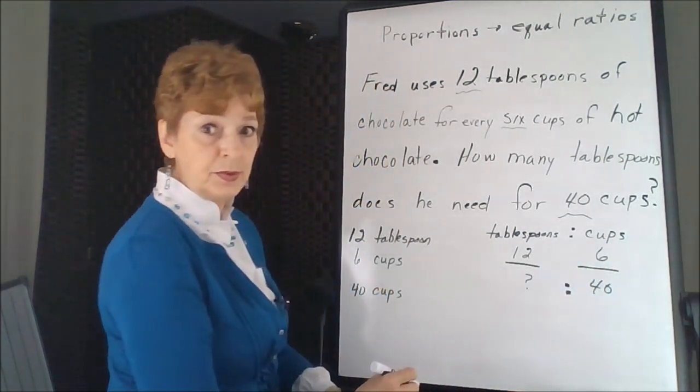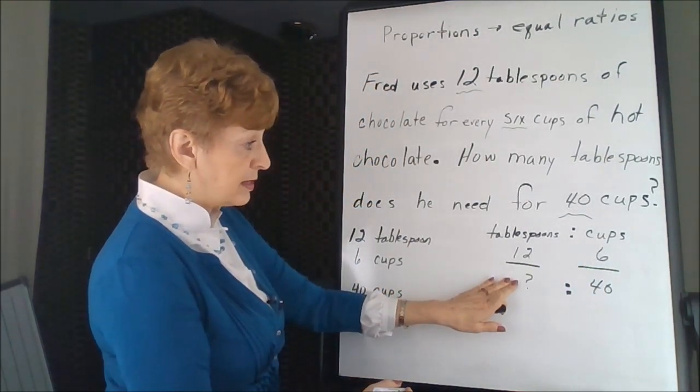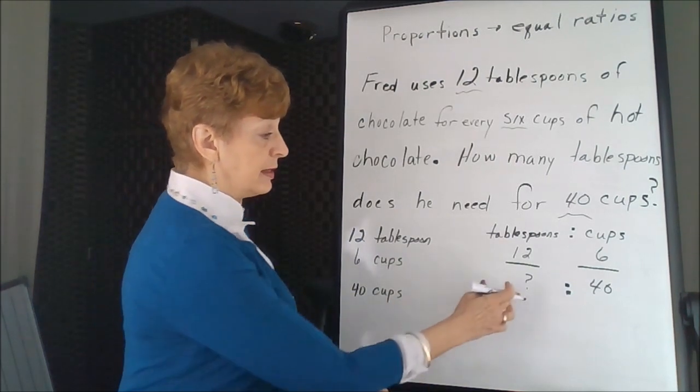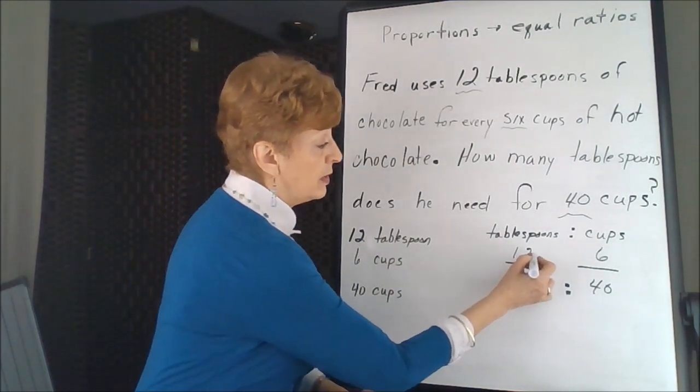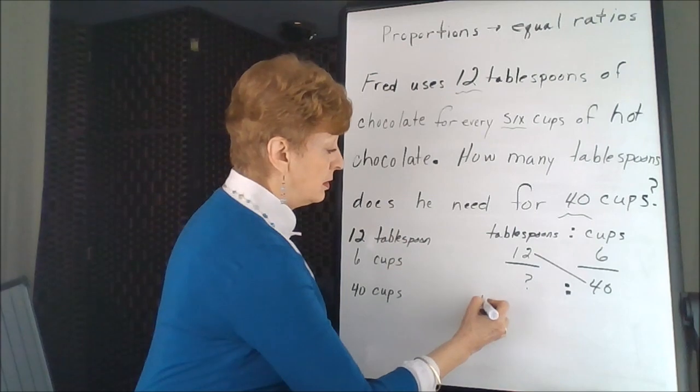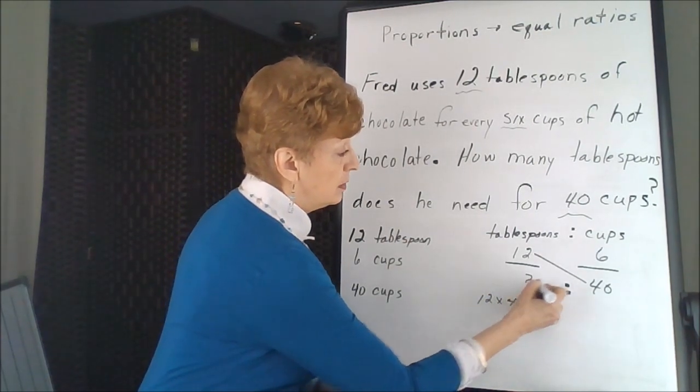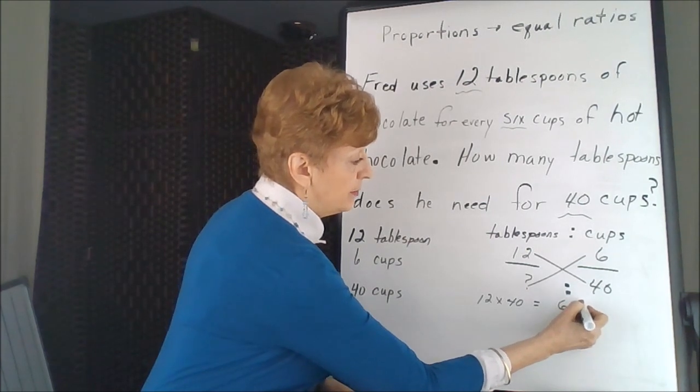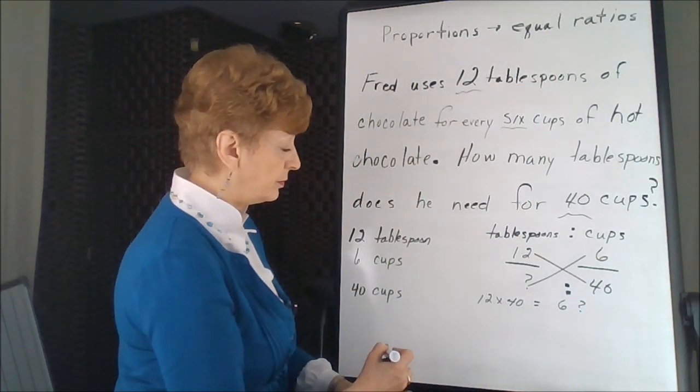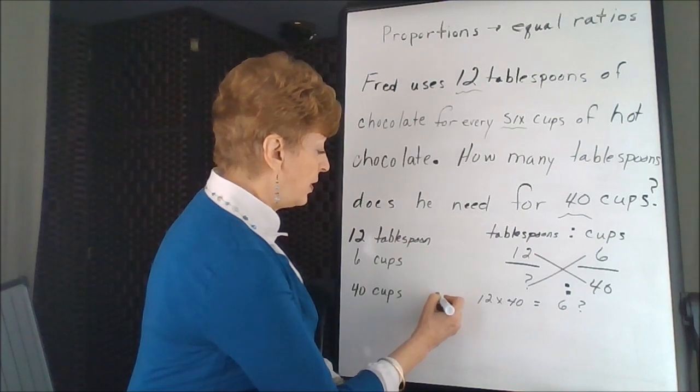So let's do our cross multiplication. And in this case, we would go 12 times 40 is equal to 6 times, we don't know. So 12 times 40,